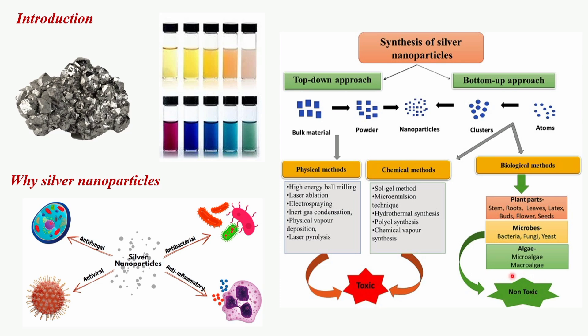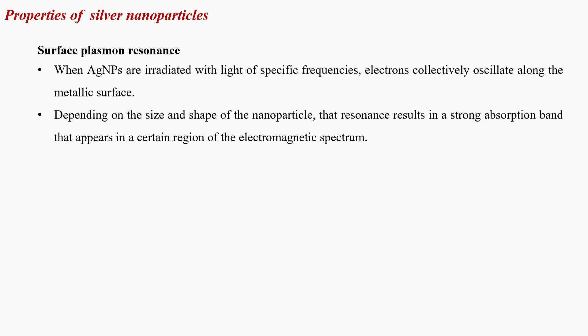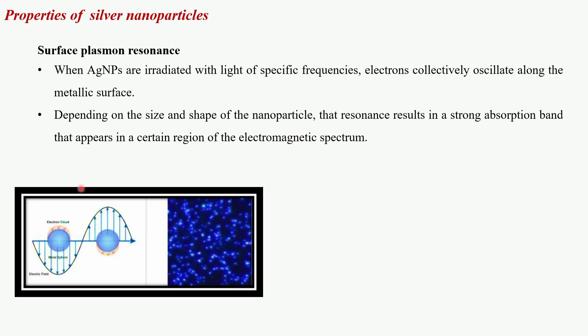Silver nanoparticles interact with light with exceptional efficiency, exhibiting strong absorption and scattering properties. This is due to the conduction electrons on the surface of the metal undergoing collective oscillations when excited by light at specific wavelengths — a phenomenon known as surface plasmon resonance. Surface plasmon resonance significantly enhances the absorption and scattering intensities of silver nanoparticles compared to non-plasmonic nanoparticles of the same size. These characteristics can be adjusted by manipulating their size, shape, and the local refractive index near the particle surface.